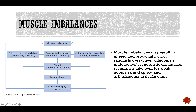The cumulative injury cycle is driven by muscle imbalances created through altered reciprocal inhibition, altered length-tension relationships, synergistic dominance where synergists take over for prime movers, and arthrokinematic dysfunction where the joint system isn't moving correctly. This leads to altered neuromuscular control, then tissue fatigue, then the cumulative injury cycle — leaving you chronically feeling hurt even just moving around.